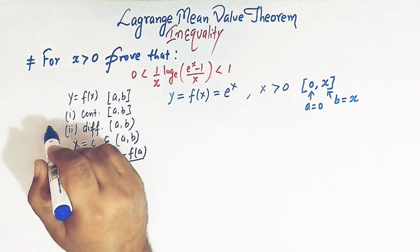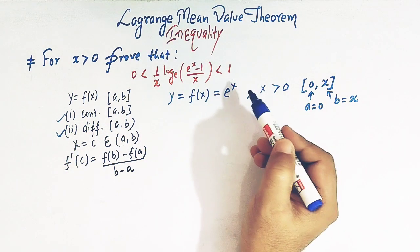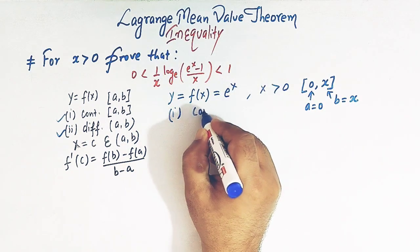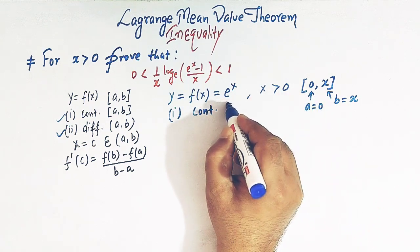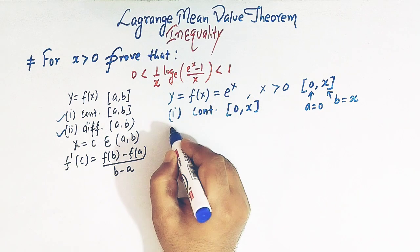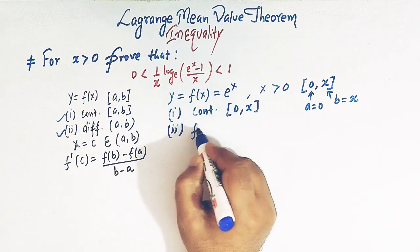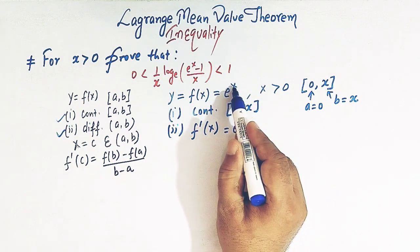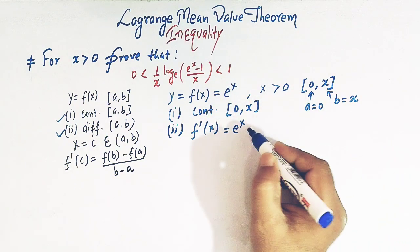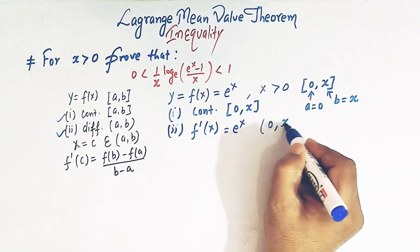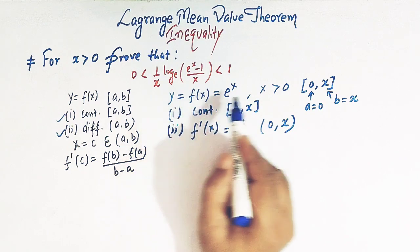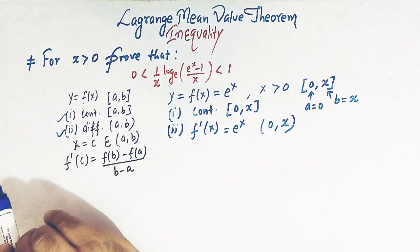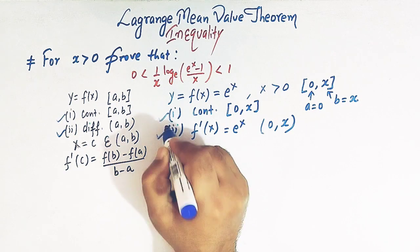Now let us check the two conditions. We know that the exponential function is continuous in its domain, so f(x) = eˣ is continuous in the interval [0, x]. Moreover, the derivative of the exponential function is the function itself — the derivative of eˣ is eˣ — and it exists in the open interval (0, x). So f(x) = eˣ satisfies both conditions of Lagrange's mean value theorem: it is continuous and derivable.